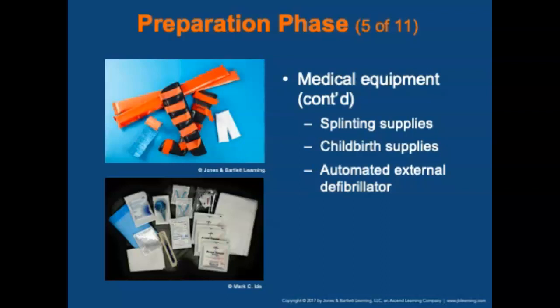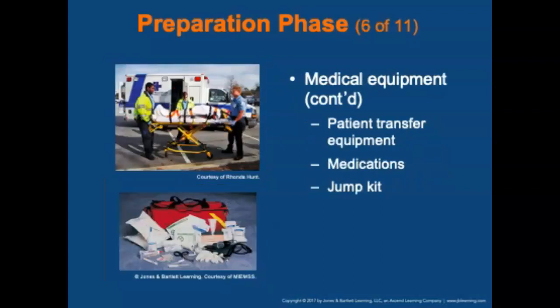Splinting supplies include adult and child traction splints, arm and leg splints including vacuum, cardboard, and wire ladder splints, roller bandages, short and long backboards, and cervical collars in adjustable and variable sizes. Childbirth supplies include OB kits, and an AED should also be on board.